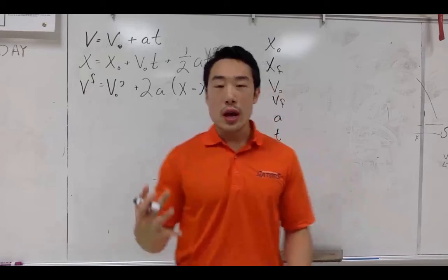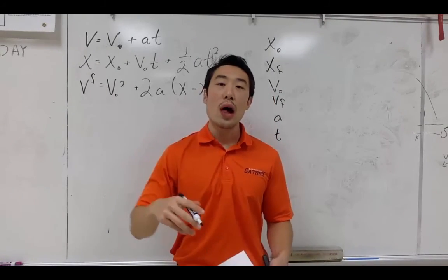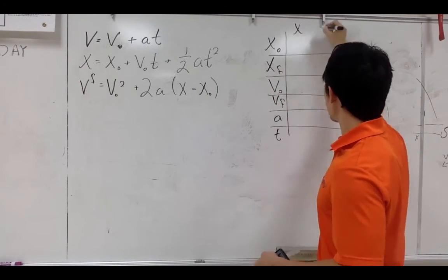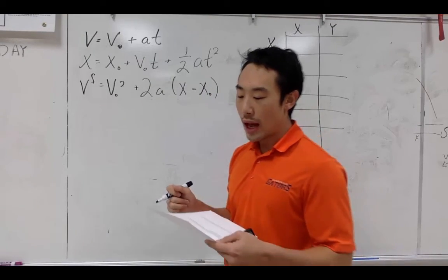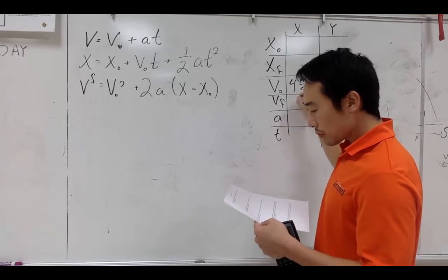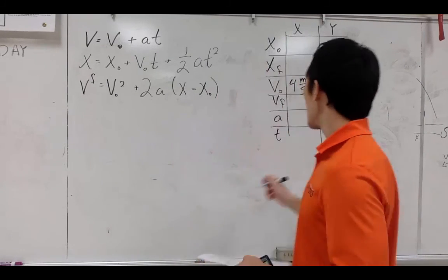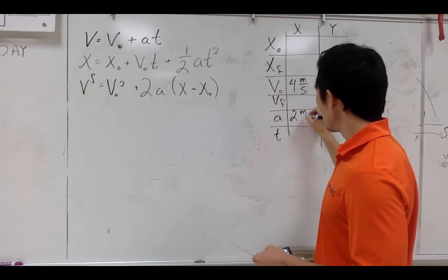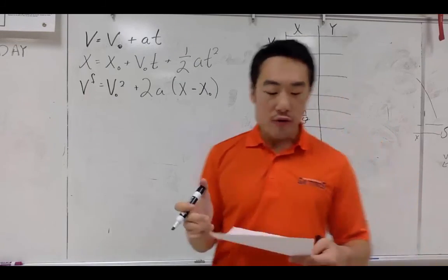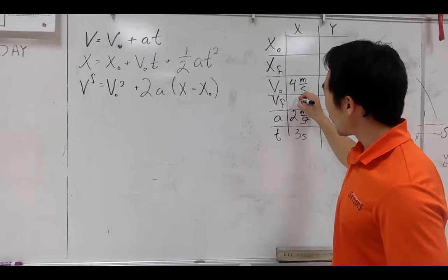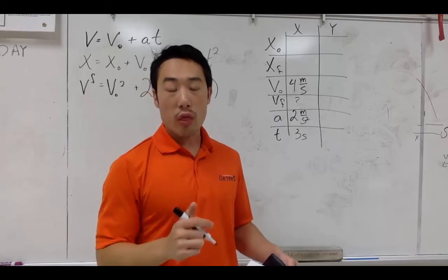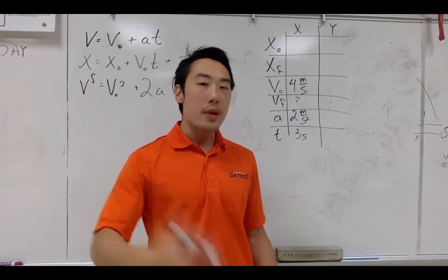When you do these, you have to know that some problems require two dimensions, so you'll have to do an x and a y table. Now it says that Georgia is running with a velocity of four meters per second — that would be our initial velocity. Don't forget your units. She accelerates at two meters per second squared for three seconds. The next step is to go to your three equations and see which one has your missing variable.